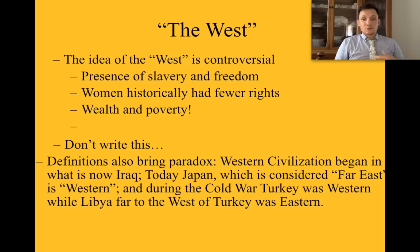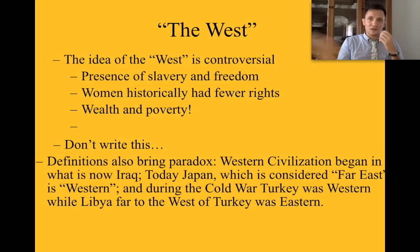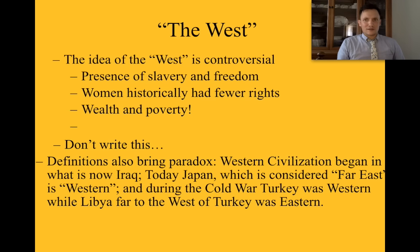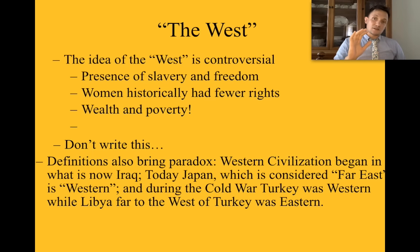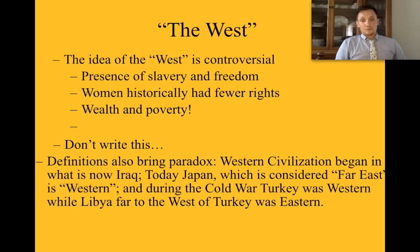Don't write this, but the definitions also bring a paradox — how it interferes with itself and how some countries have become a Western civilization even though they didn't used to be. For example, Western civilization began in what's present-day Iraq. And today, Japan, which is considered a Far East country geographically, is Western in their practices because they're capitalist and their economic system is based almost completely off the United States. So are they Western? Are they still Eastern? Are they a hybrid? We just don't know. Also during the Cold War, Turkey was Western, while Libya — far to the west of Turkey — was considered Eastern. Through time, some countries and cultures go in and out.